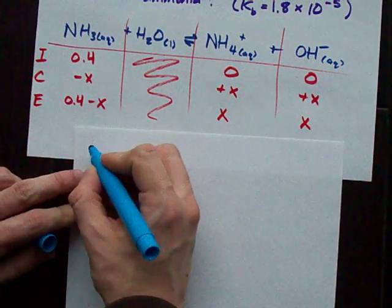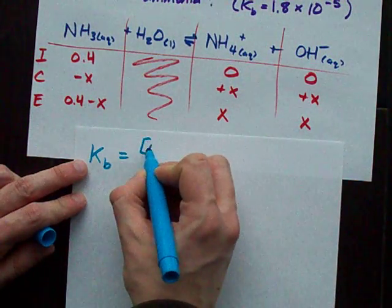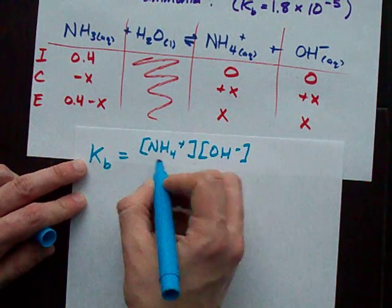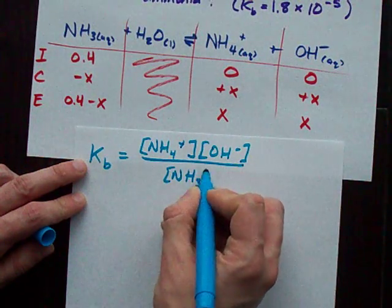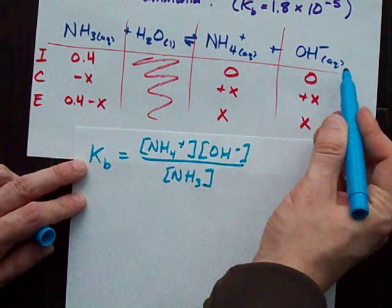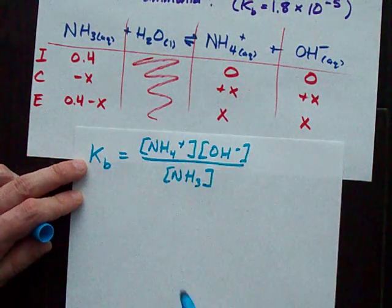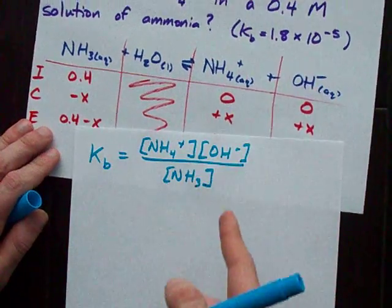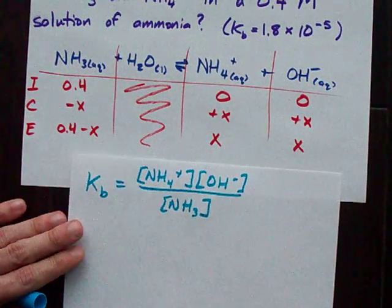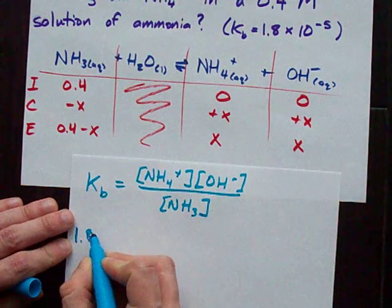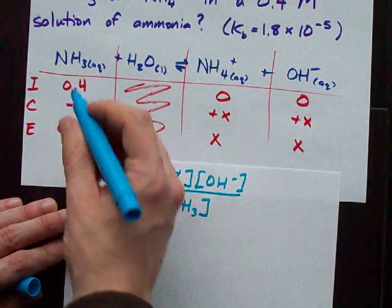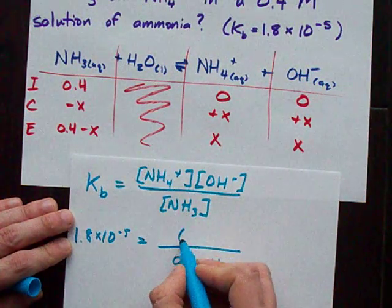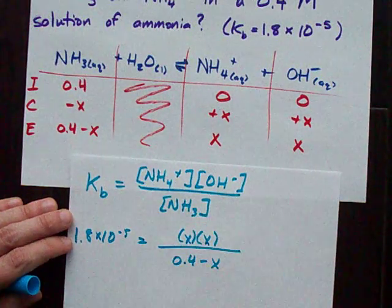Here's what I'm talking about. Kb is products over reactants. In this case, NH4 plus and OH minus on top, NH3 on bottom. Those are all the aqueous components from the chemical reaction. Water is not included because it's a liquid. What we do is we plug in all the numbers that we know. So our K, we're told is 1.8 times 10 to the minus 5. Our NH3 is 0.4 minus x and our two concentrations in the numerator are also both x.